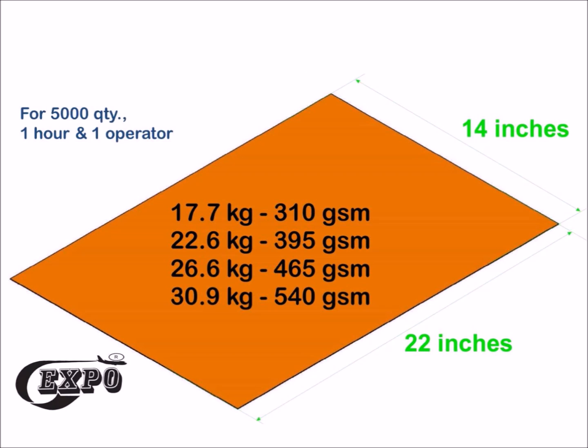We require heavy cutting machine to cut the paper board into 14 inches by 22 inches for spring file making purpose. This approximately takes one hour and one operator.